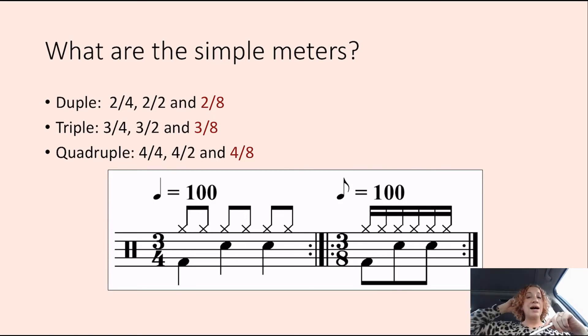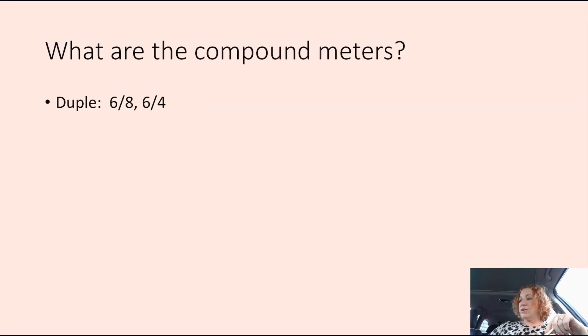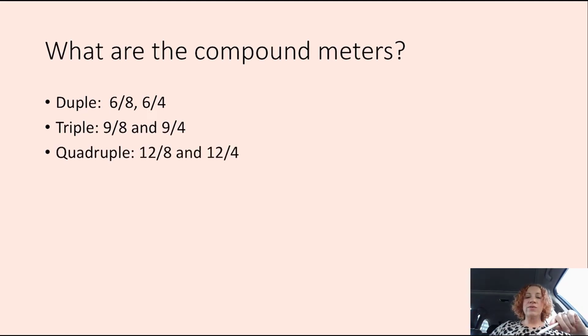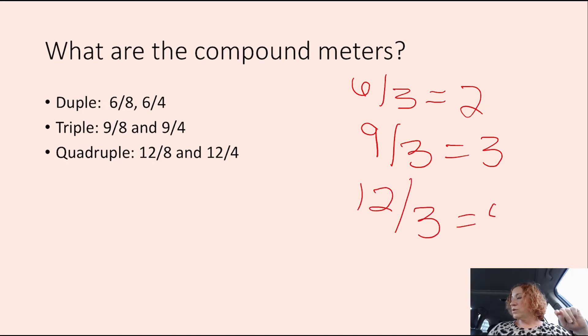Okay. So let's talk about the compound meters. Now, today we're just talking about simple meters in terms of getting into a deep dive. But I want to let you know what the compound meters are so that you can save that in your head for later. So what are the compound meters? They are 6/8, 6/4, 9/8, and 9/4, 12/8, and 12/4. You can see how these are related, hopefully. To get the duple or the triple or the quadruple, you have to divide the first number by 3. 6 divided by 3 is duple. 9 divided by 3 is triple. And 12 divided by 3 is quadruple. Yay!